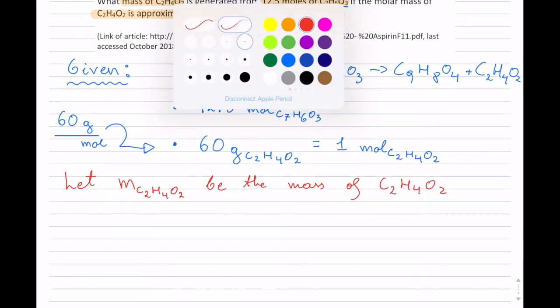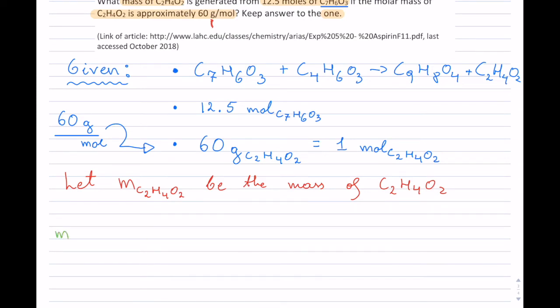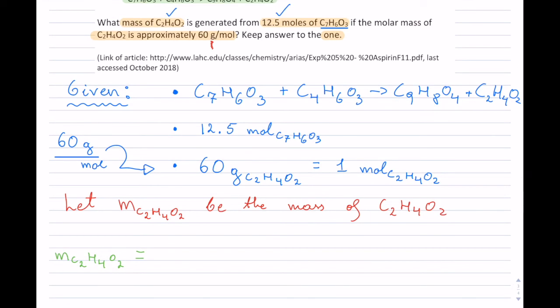All right, so now let's set up this question. So we have M of C₂H₄O₂, and that is equal to. So how do you use these givens in order to solve this? So what I always like to do is, I will first always start with the given that has the single unit, and in this case, that particular given is right here. So I have this that they give me, which is 12.5 moles of C₇H₆O₃, so I'm going to write that down for myself.